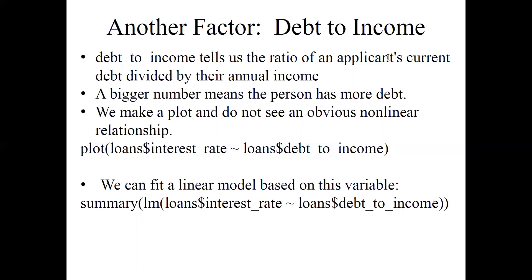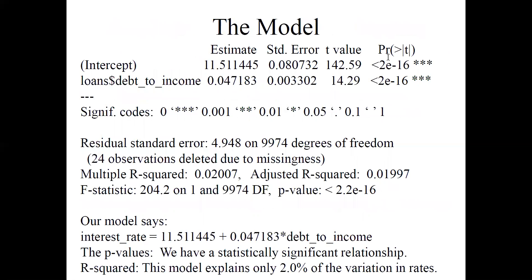Summary lm, loans$interest_rate—that's our Y, that's our output factor—tilde loans$debt_to_income. We see what happens with that. Again, we get all of our output. We fit a model. There's our intercept of 11.5 and our slope of 0.047 times debt_to_income to get our straight line equation model.